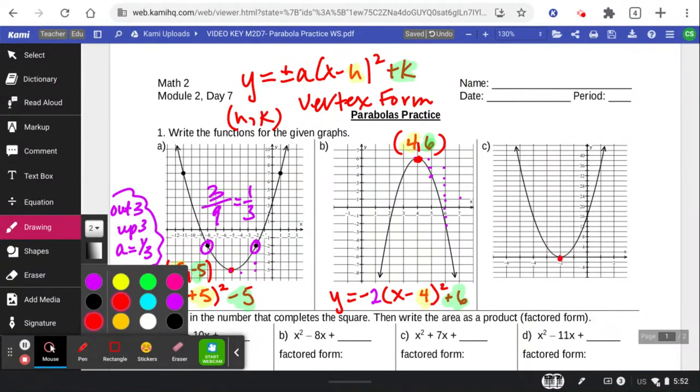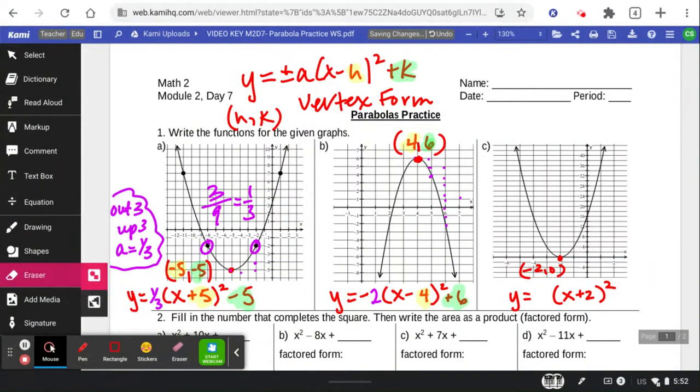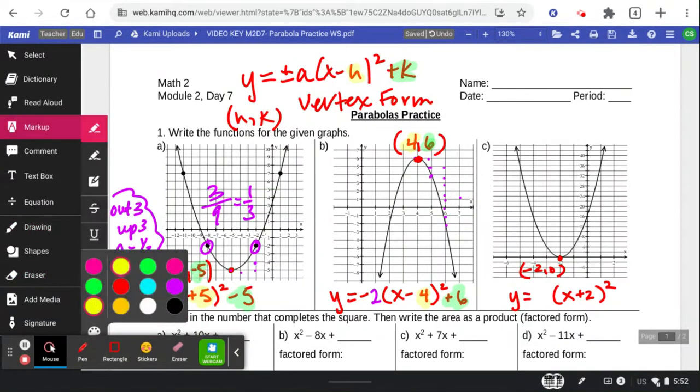Alright, last one. This is at negative 2, 0 for our vertex. It's an upwards-facing parabola. So x minus a negative 2 plus 0. But do we even really need that plus 0 at the end? Nope. So this shows up here, and the 0 shows up as nothing at the end.